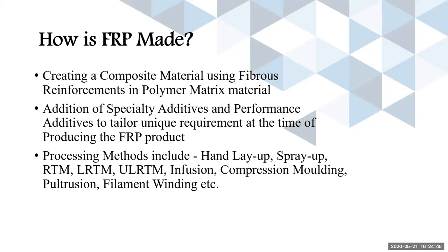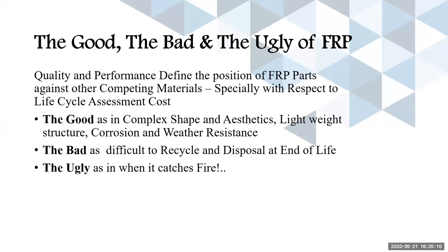There are different ways of processing these materials: hand layup by manual operation, spray-up operation, resin transfer molding (RTM) and its variants like LRTM and ULRTM, infusion process, compression molding, pultrusion, filament winding, and a host of other methods. One needs to know the good, the bad, and the ugly of FRP before judging and evaluating its use for a given application competing against other materials.